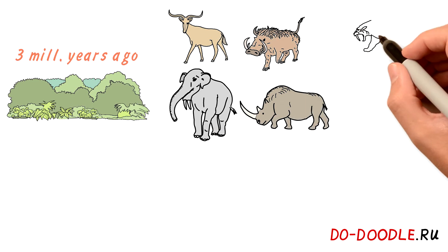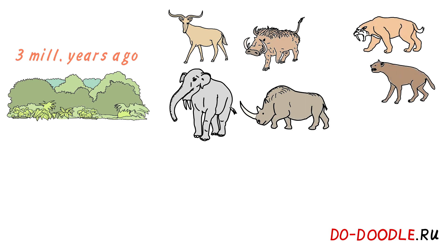They were hunted by saber-toothed tigers, giant pachycrocuta hyenas and chasmaporthetes hyenas, also known as running hyenas.